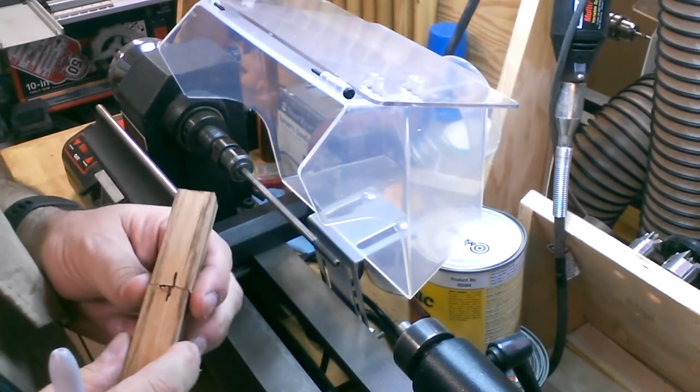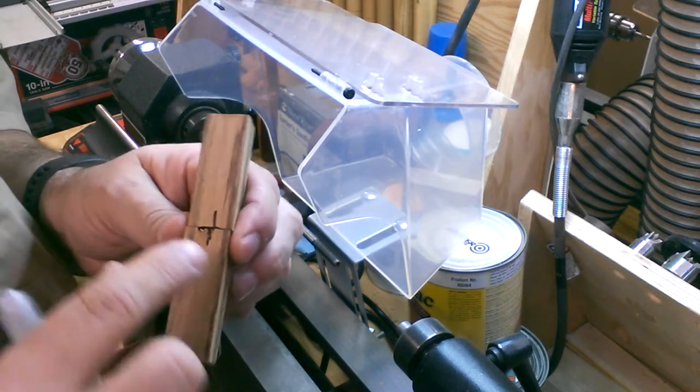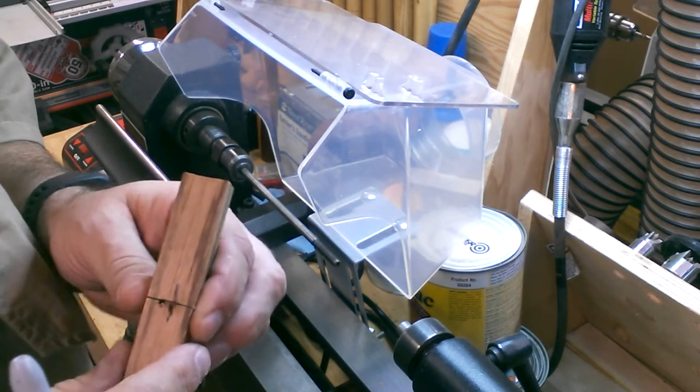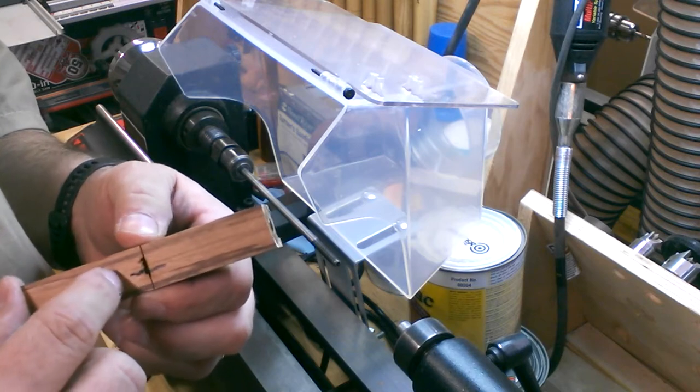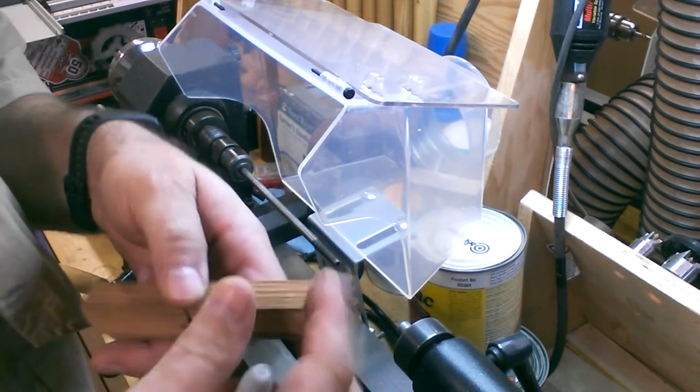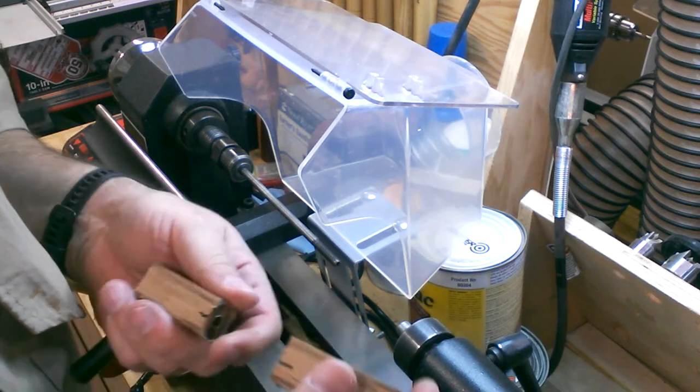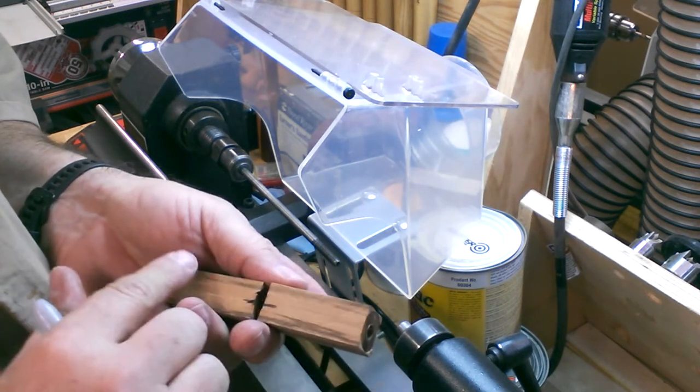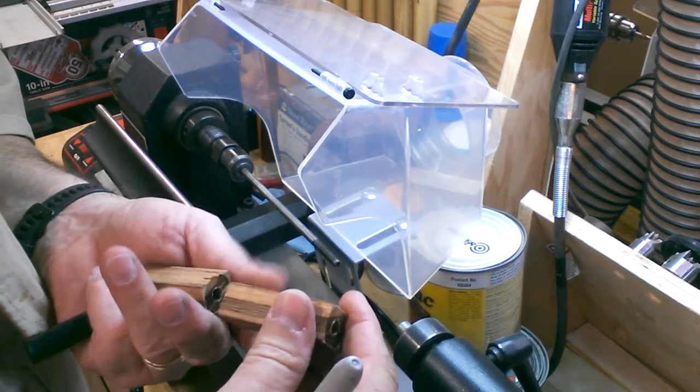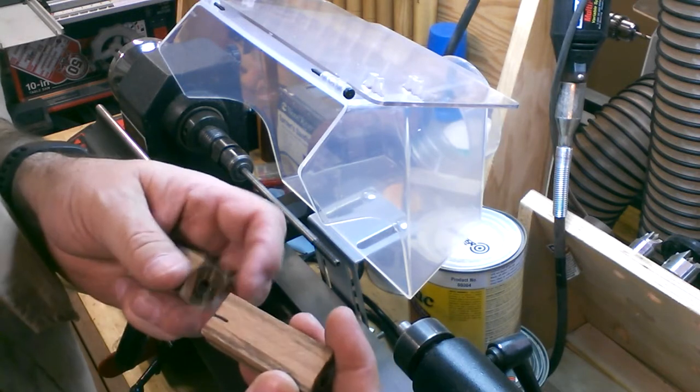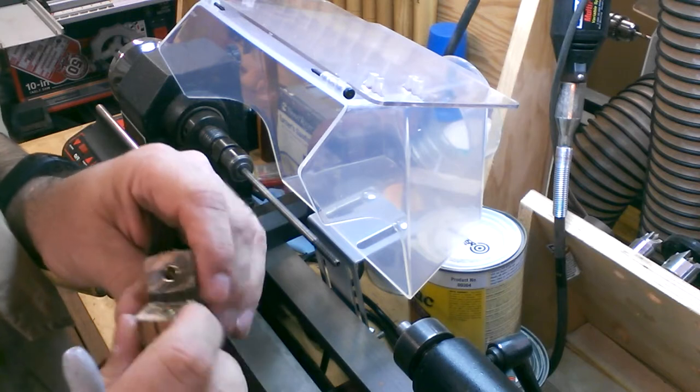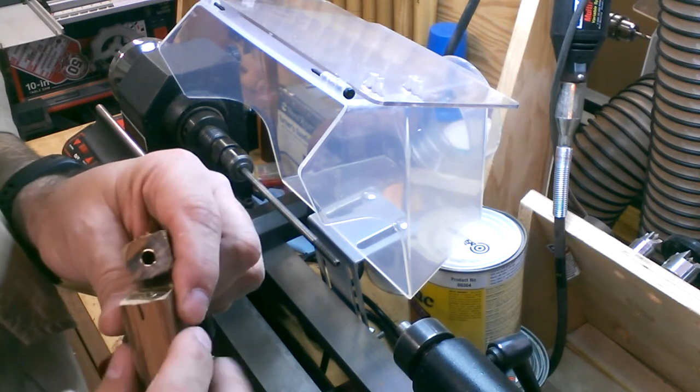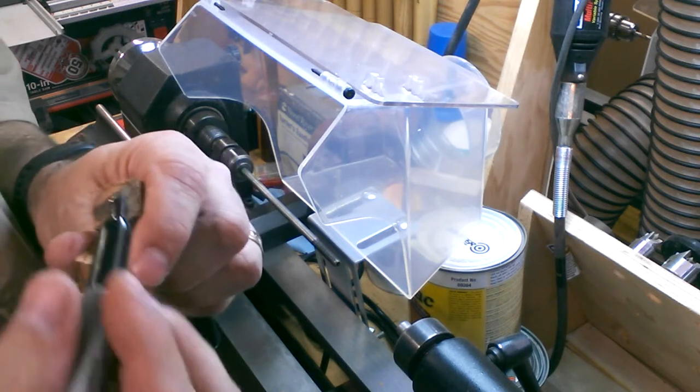So before I mount this up on the lathe, I just want to show you that I had this mark on here from earlier. I forgot to show you guys. Before I cut the pen blank in half, I mark it so I remember which direction the grain is running because when you put the pen back together it's always aesthetically pleasing if you can get the grain to run continuously.